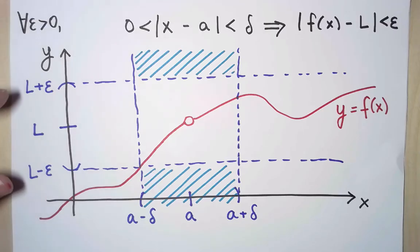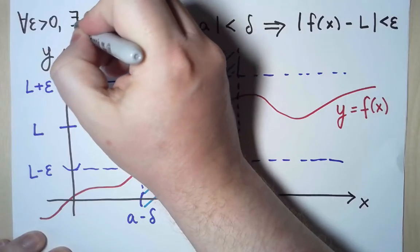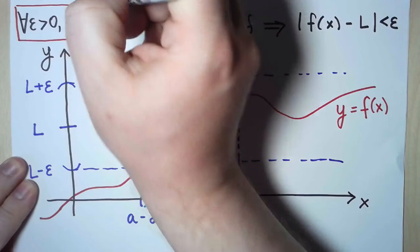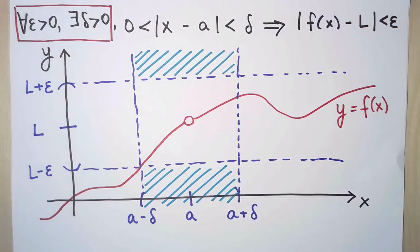And then, for every value of ε, I don't need lots of values of δ. I just need one single value of δ for each value of ε. So I'm going to request that for every value of ε, there exists one value of δ that makes the implication true.